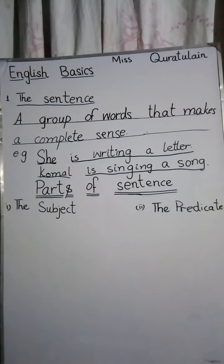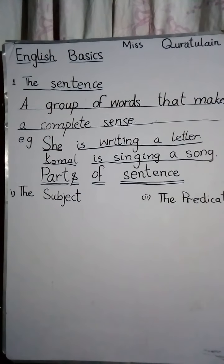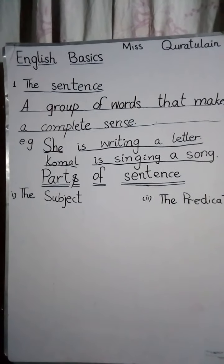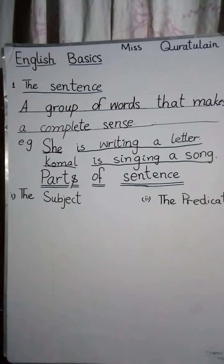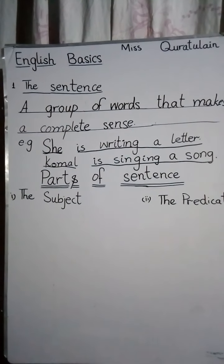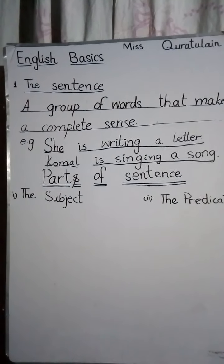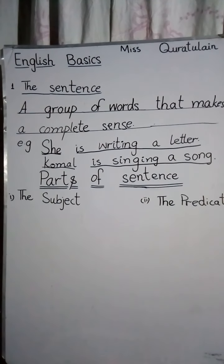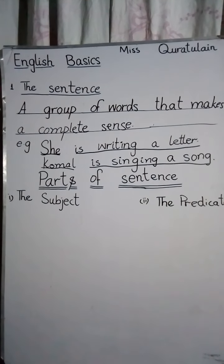Now students, it's your turn. Write more than 10 sentences and underline the subject and the predicate separately. After practicing sentences and their parts, we are going to learn about the kinds of sentences.